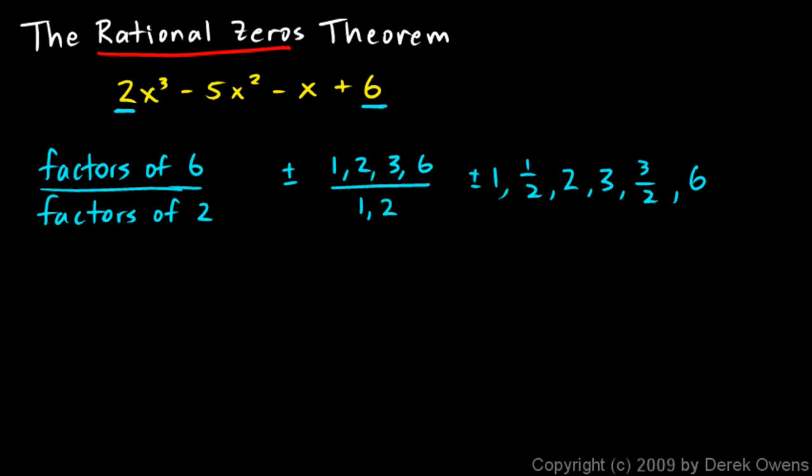So we'll start with one here. Okay, so I set up the synthetic division and I write down my coefficients: 2, negative 5, negative 1, 6. And let's see if this works. We're going to be seeing if x minus 1 is a factor. So bring down our 2. 2 times 1 is 2. We add, we get negative 3. Times 1 is negative 3. We add, we get negative 4. Negative 4 times 1 is negative 4. And we add, and we get 2. So that one didn't work.